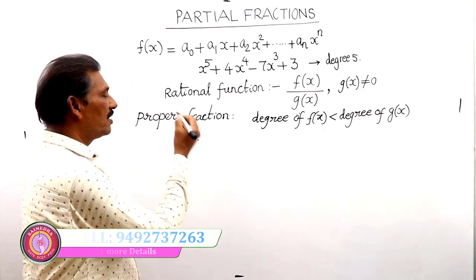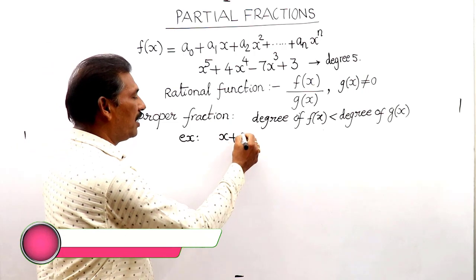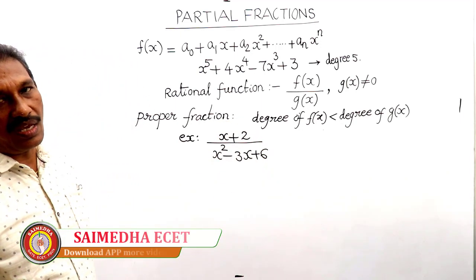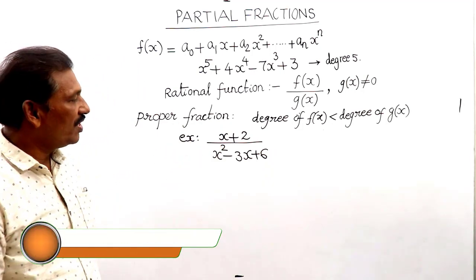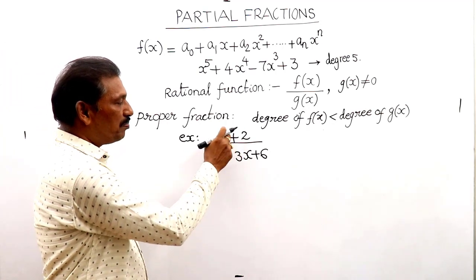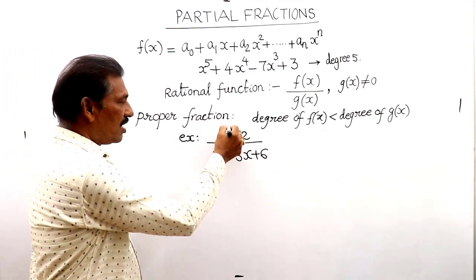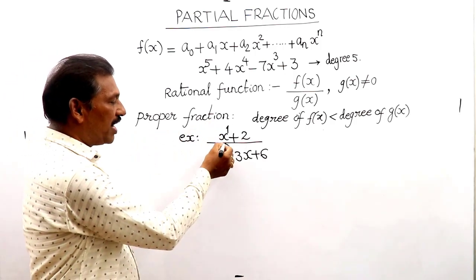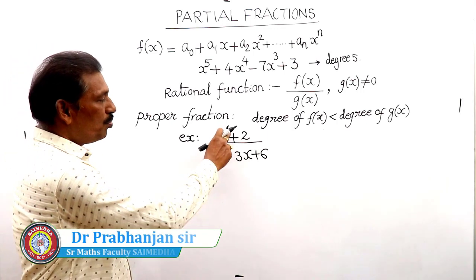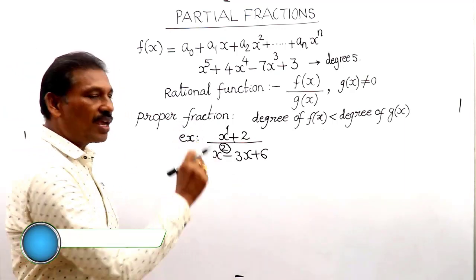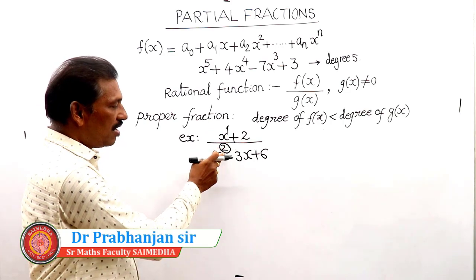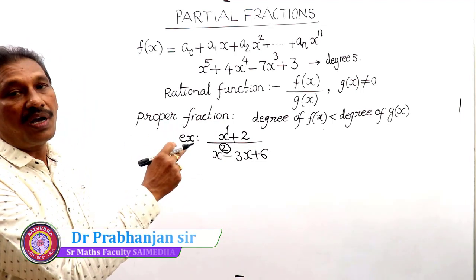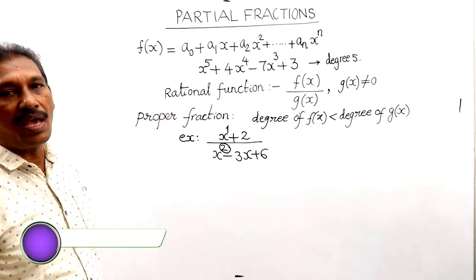For example, consider (x + 2) divided by (x² − 3x + 6). In the numerator, the power of x is 1. In the denominator, the highest power is 2. Since the numerator degree is less than the denominator degree, this is called a proper fraction.